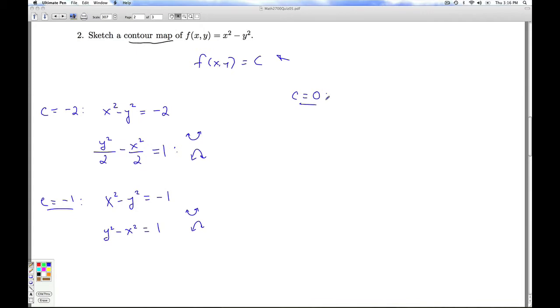Let's look at c equals 0. I get x squared minus y squared equals 0. That means I get y squared equals x squared. So y equals plus or minus x. And what are those? Those are a pair of intersecting lines that go through the origin.